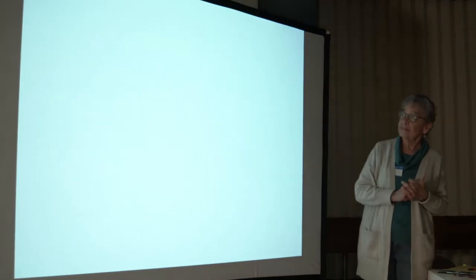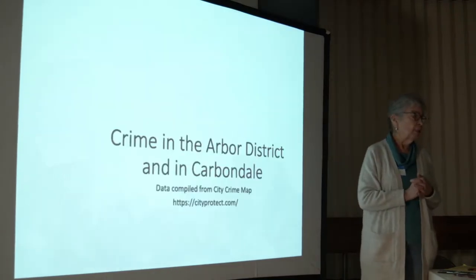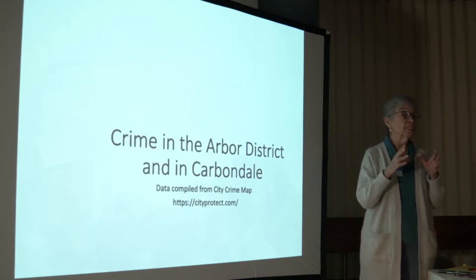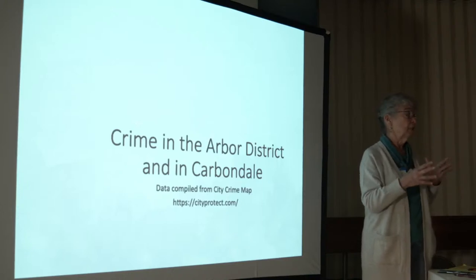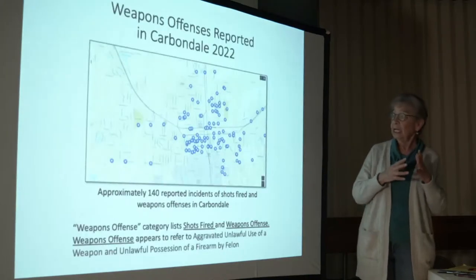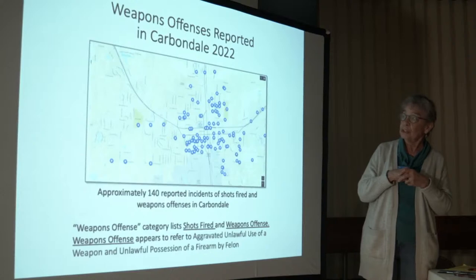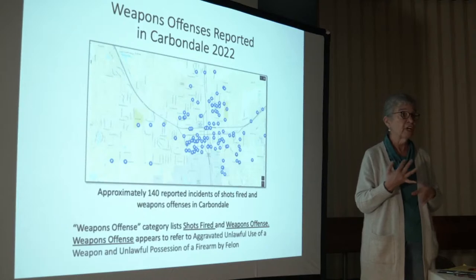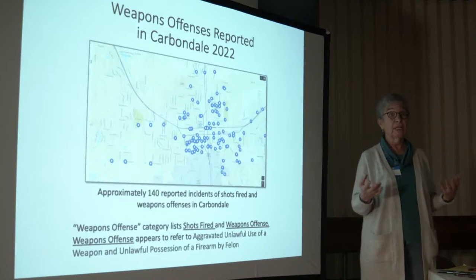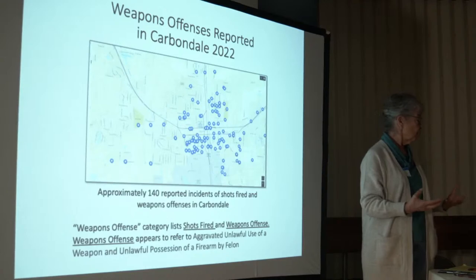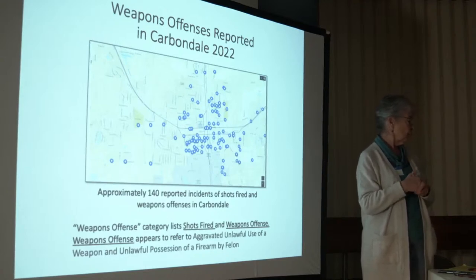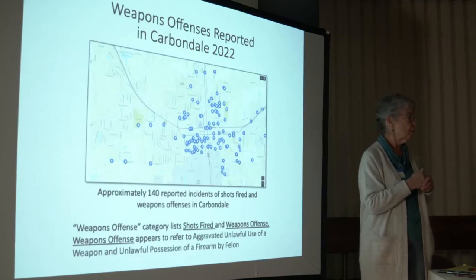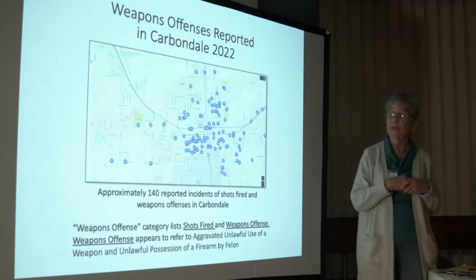Now let's go to some of the facts. I got energized to go to the city crime map and actually see the nature of crime in our neighborhood. I looked at weapons offenses. Weapons offenses are both shots fired and, in the general category, weapons offense. I'm not sure what falls into that — I don't know if the state's attorneys can help us — but it's a broad category.